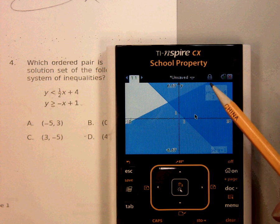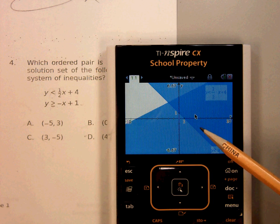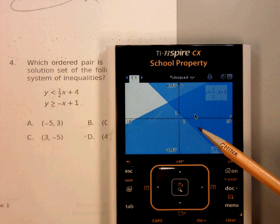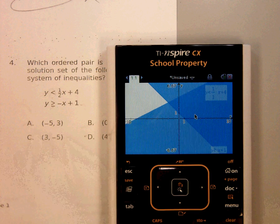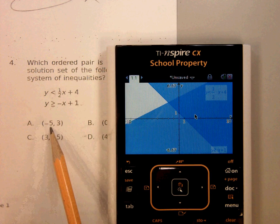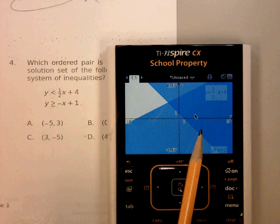This is solid. This is dashed. There is my solution set. My solution area, the double shaded region. Excuse me.